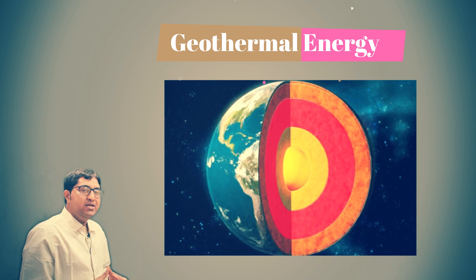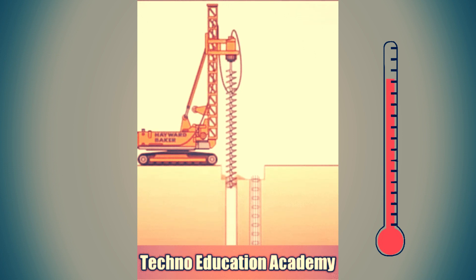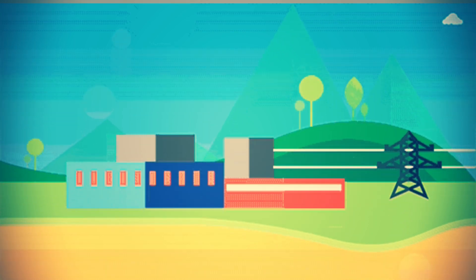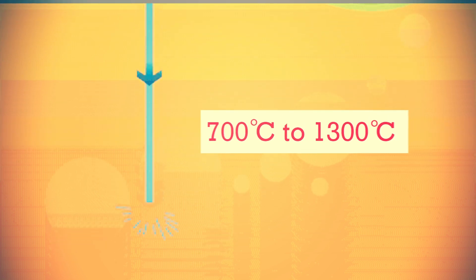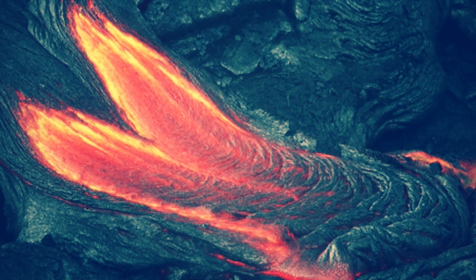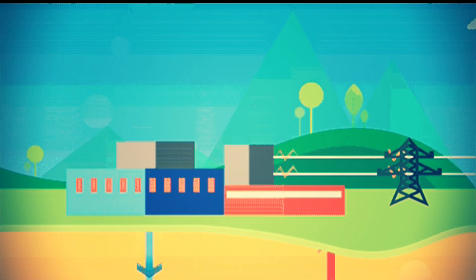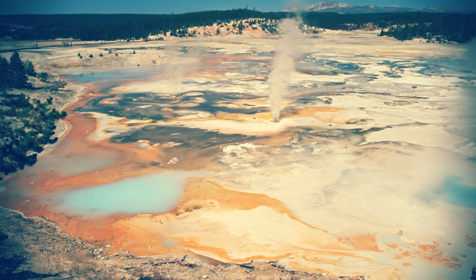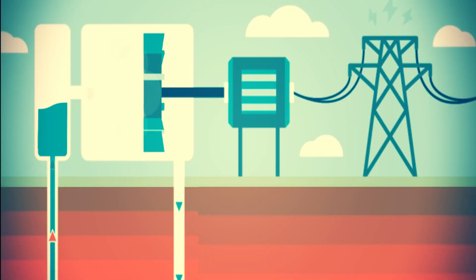Earth temperature rises with depth from the surface to the core. If underground rock formations are heated to about 700°C to 1300°C, they can become magma — molten rock permeated by gas bubbles. Magma heats nearby rocks and underground bodies of porous rock, or sediment saturated with groundwater. This water can be released through hot springs, steam vents, underwater hydrothermal vents, and mud pools — these are the different resources of heat.